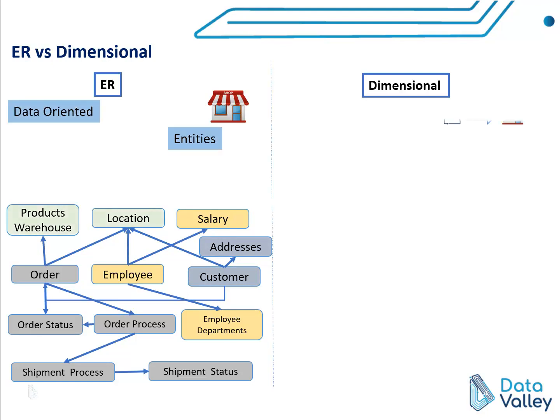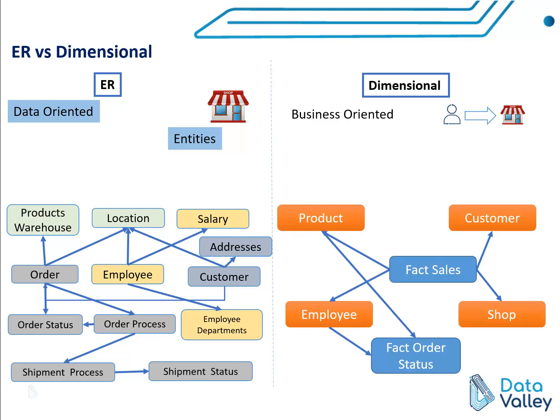On the other hand, we have dimensional modeling. Dimensional modeling is business oriented — the business process or business event is the basic unit of design. In dimensional modeling we start by checking available events or business processes. For example, if we are building a dimensional model for the same retail shop, we look at a business event such as a customer purchasing an item from our shop.